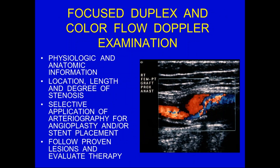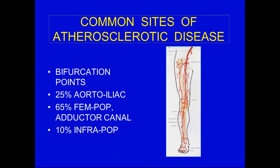The focused Doppler and color flow examination gives physiologic and anatomic information. It can give you the location, length, and degree of stenosis. It gives selected application of arteriography for angioplasty and/or stent placement, and it can follow proven lesions and evaluate therapy. More and more people are using this primarily for above down to the popliteal region, though many are still using it for the lower extremity, meaning in the calf region.